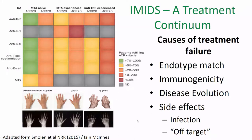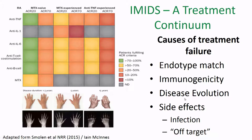What are the causes of treatment failure? These could be multiplex: they could be due to the underlying match of the endotype being treated, they could be due to immunogenicity — that's immune response to the drug itself and deactivation of the drug — they could be due to the evolving state of the disease in each patient, and of course things like side effects. Infection is a common side effect; there's some immune suppression with biologic drugs and off-target effects.